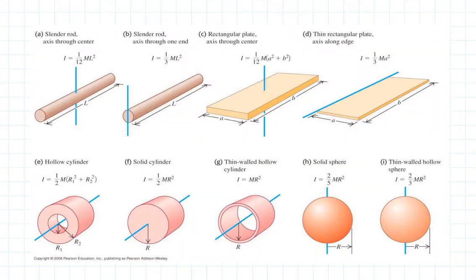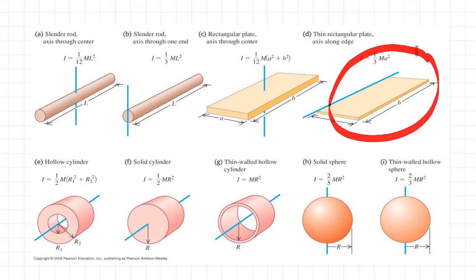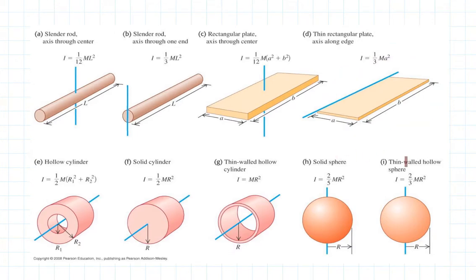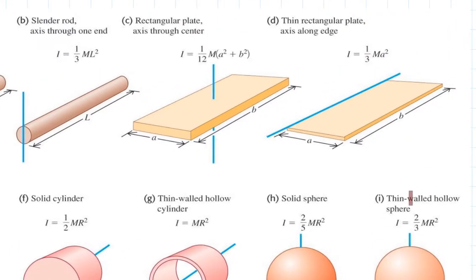As we look at the table, we see there's the situation we're interested in — the door, a flat rectangular object rotating about one axis. We can see that the rotational inertia is one-third M A squared, where A is the width of the door, the dimension that comes off of the axis of rotation. You might notice something familiar about that.